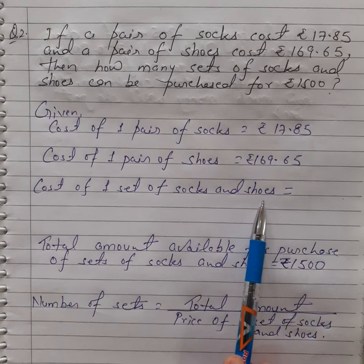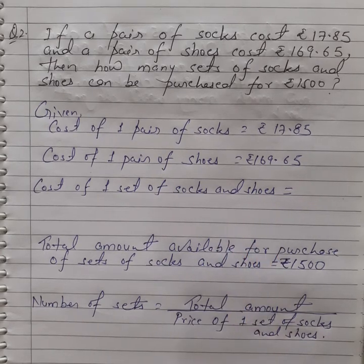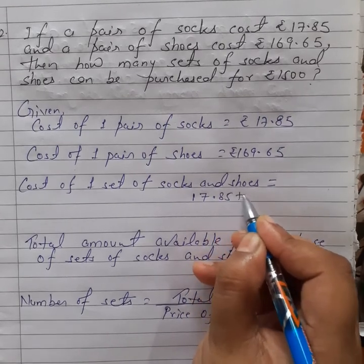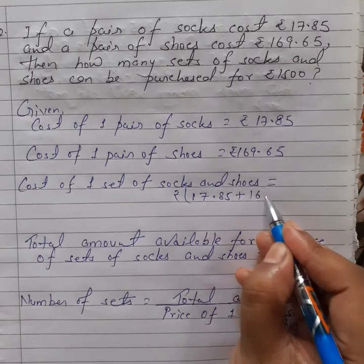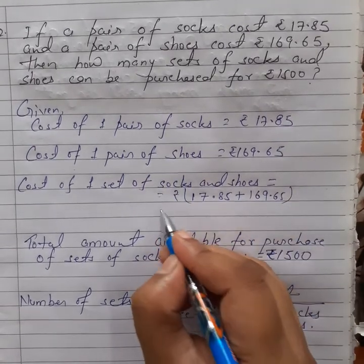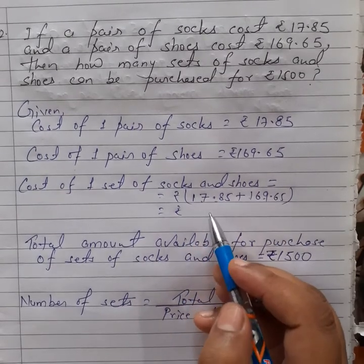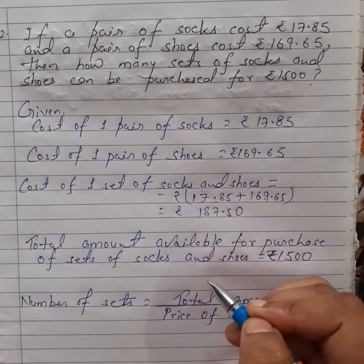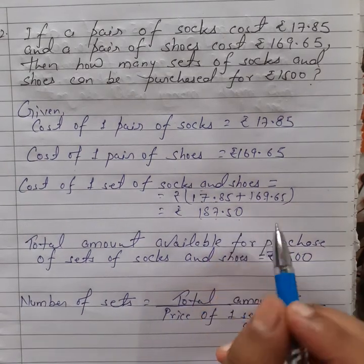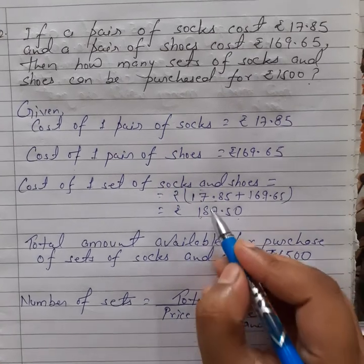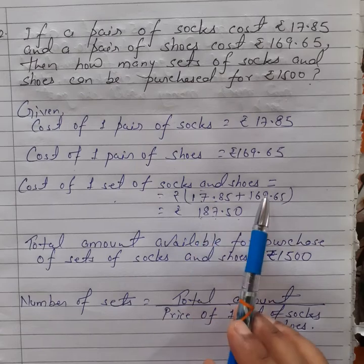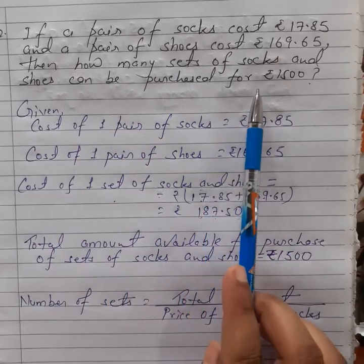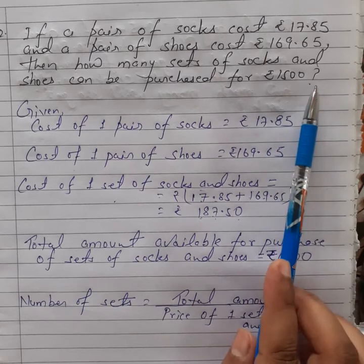The cost of one pair of shoes is 169.65, and adding the cost of socks we get the cost of one set of socks and shoes is equal to rupees 187.50. It means in rupees 187.50 we can purchase one set of socks and shoes. Now, how many sets can be purchased for rupees 1500?